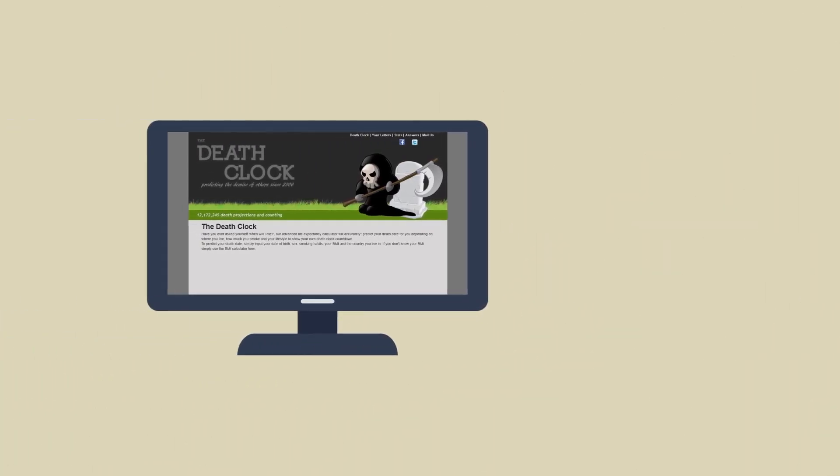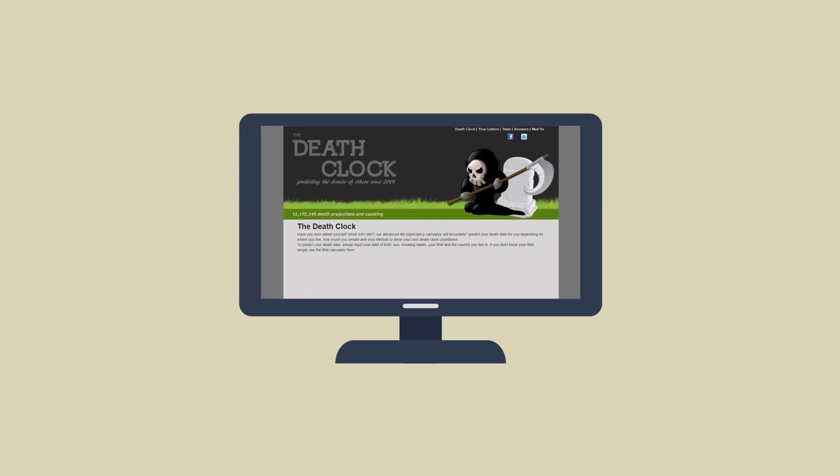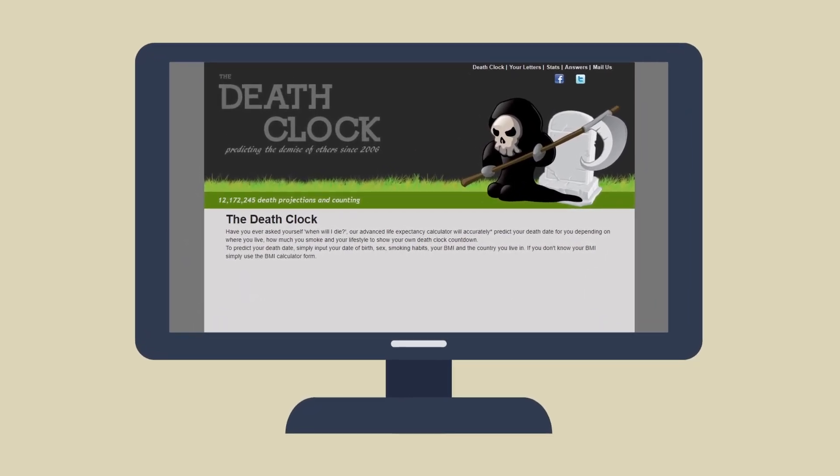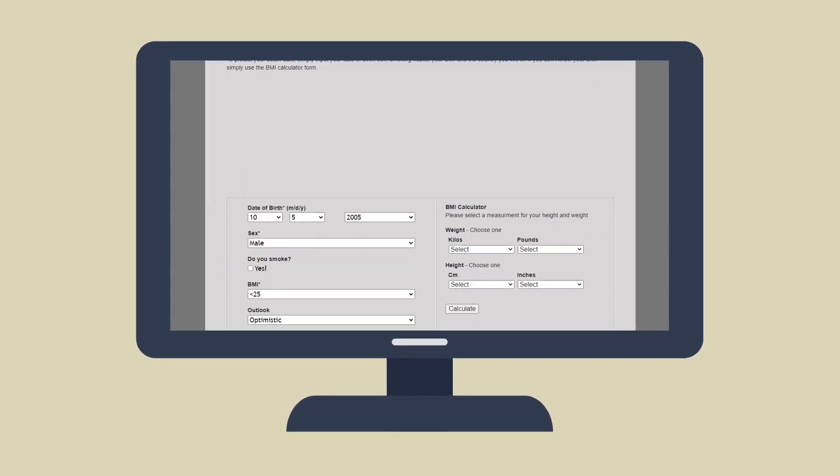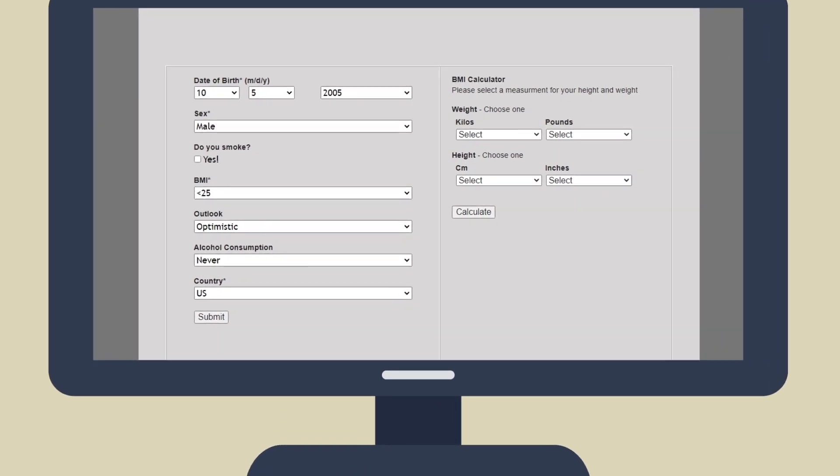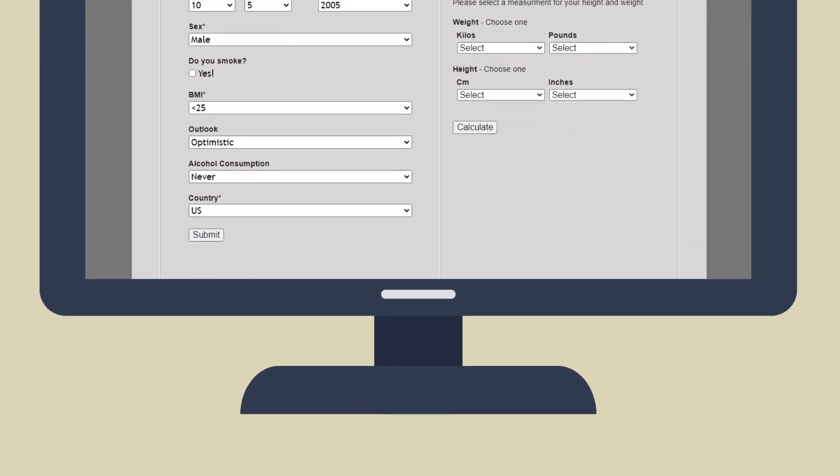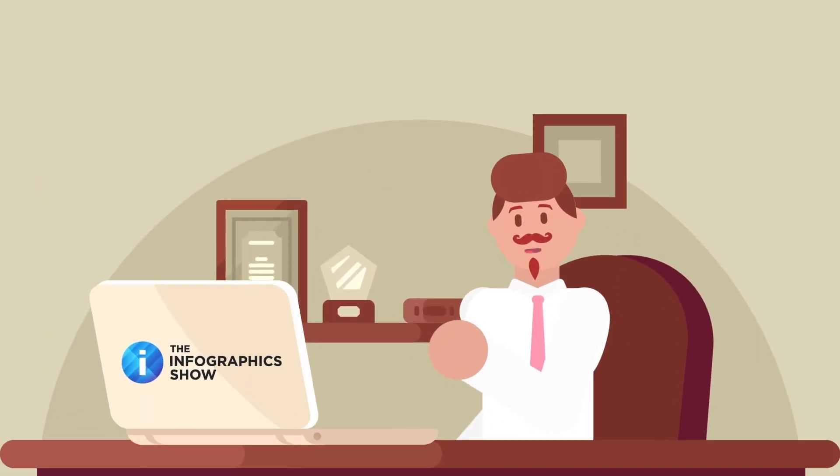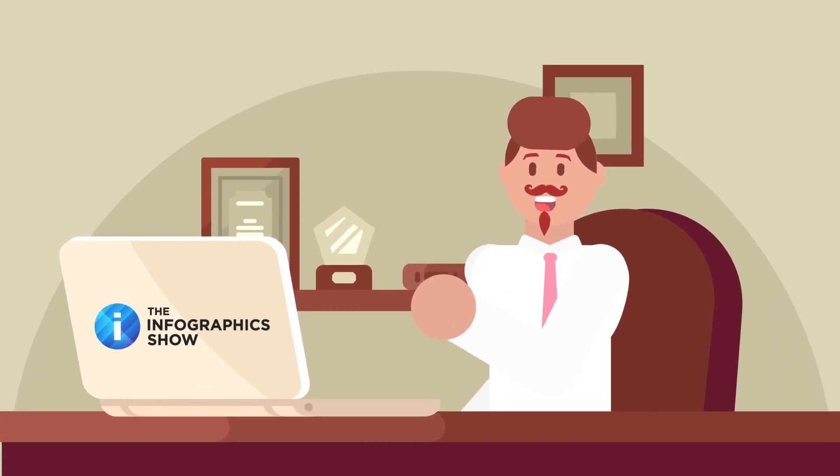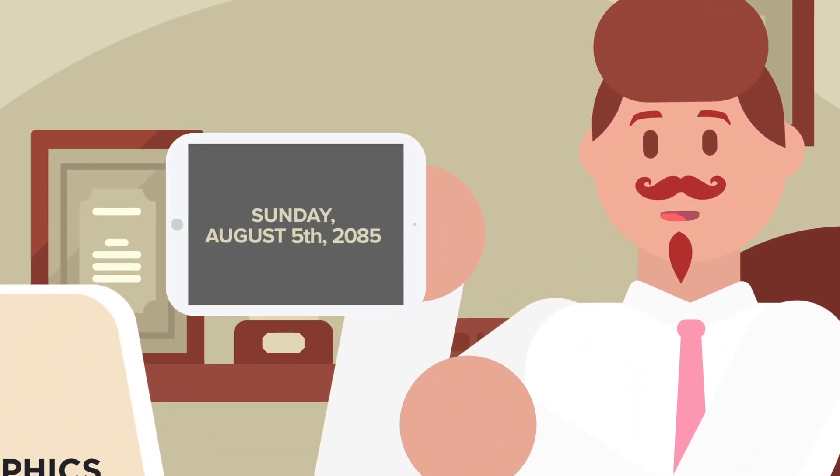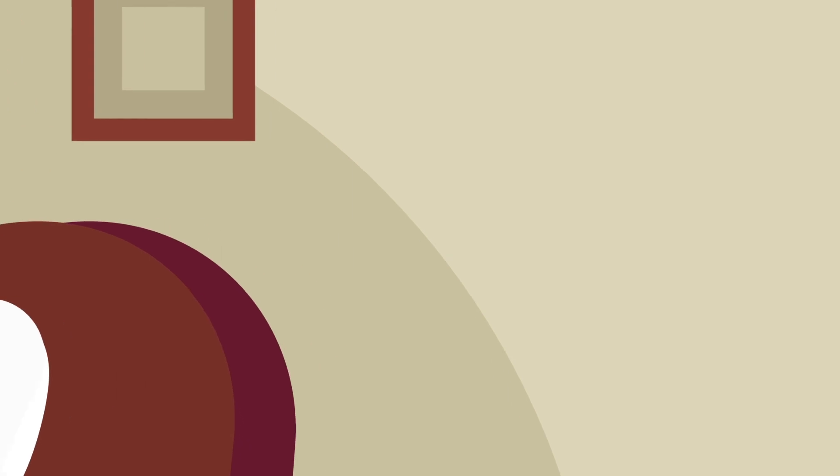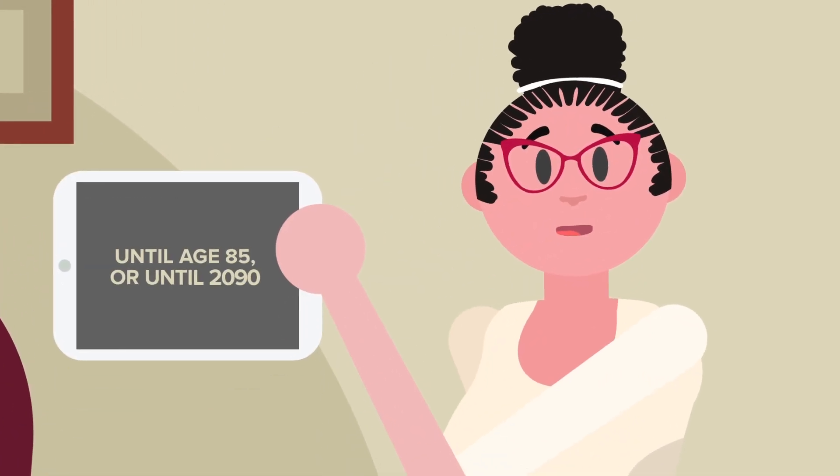According to DeathClock.org's calculator, a 15-year-old male born in the US who is of average height and weight, doesn't smoke or drink, and is not depressed, can expect to live to the ripe old age of 80. The calculator actually takes it a step further and estimates their date of death to be Sunday, August 5th, 2085. A female with similar factors would live until age 85, or until 2090.